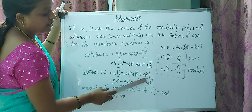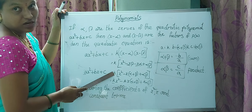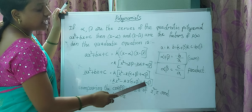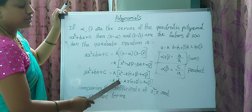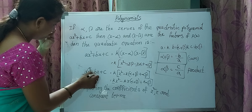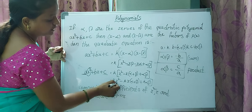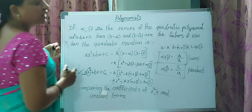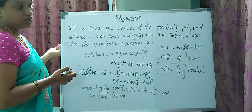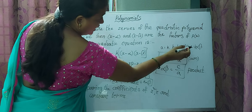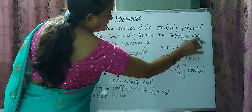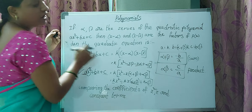So the last term is alpha·beta. Multiplying the complete equation by the constant k gives: kx² - k(alpha + beta)x + k·alpha·beta. Comparing with ax² + bx + c, we get: a = k, b = -k(alpha + beta), and c = k·alpha·beta.